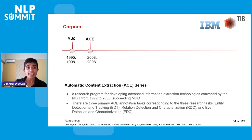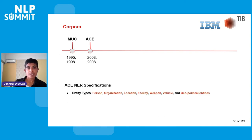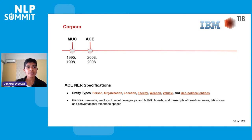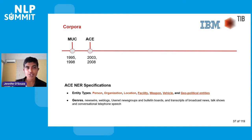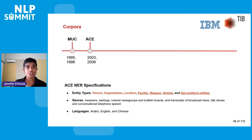Following MUC, ACE was a follow-up shared task series. The ACE corpus extended MUC with additional named entity types: facility, weapon, vehicle, and geopolitical entities. It also expanded the genre of text beyond newswire to weblogs, bulletin boards, and transcripts of broadcast news. Furthermore, it covered three different languages: Arabic, English, and Chinese. Around the same time, the CoNLL shared task series began in 2002, focusing on language-independent named entity recognition.